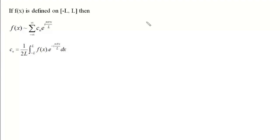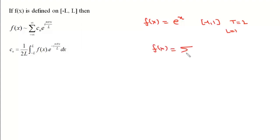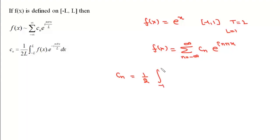Now let us take another example. Suppose we have f(x) equal to e to the power x, defined in the interval minus 1 to plus 1. The period is 2, so the value of L is 1. We can write f(x) as a summation where n varies from minus infinite to plus infinite of c_n times e to the power iota n pi x by L, with L equal to 1. The coefficient c_n will be 1 upon 2L, which is simply 1/2, times the integral from minus 1 to plus 1 of e to the power x times e to the power minus iota n pi x dx, which simplifies to e to the power (1 minus iota n pi) times x.